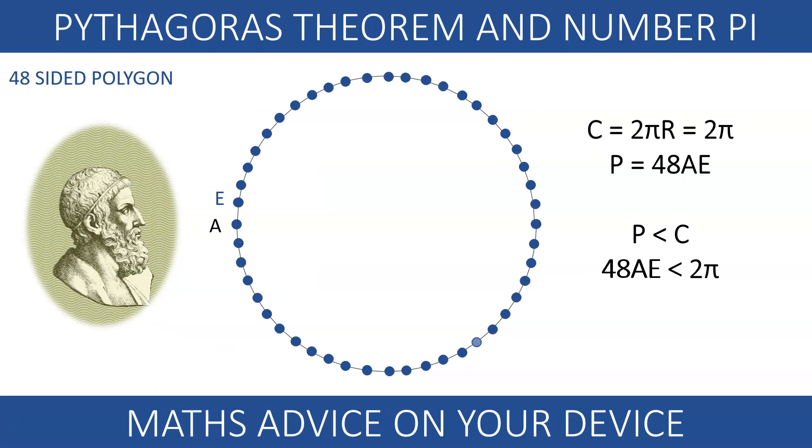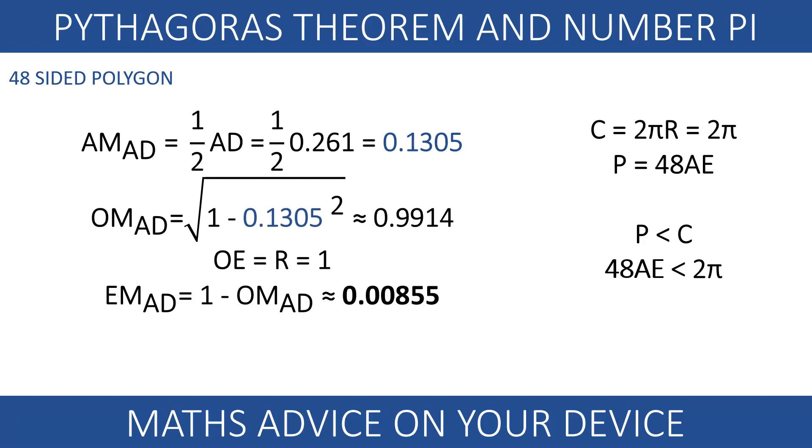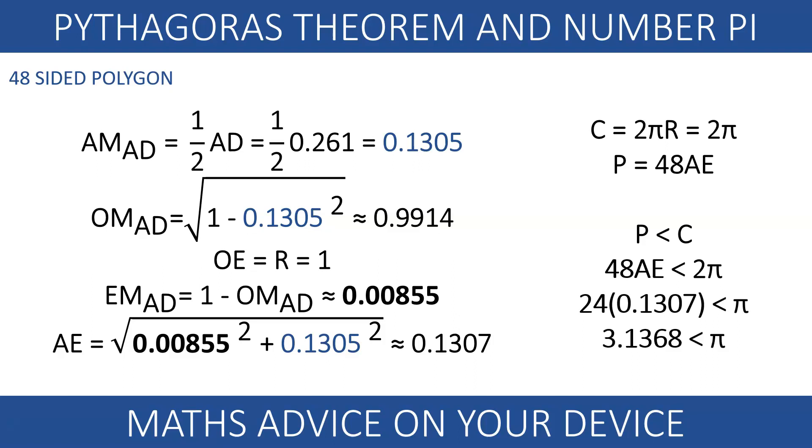Archimedes carried on with a 48-sided polygon. He halved the previous side AD. He used Pythagoras on the right triangle to calculate the distance between the center O and the new midpoint. Then the length joining E and the new midpoint is 1 take away 0.9914. The length of each side is 0.1307. Pi is bigger than 3.1368.